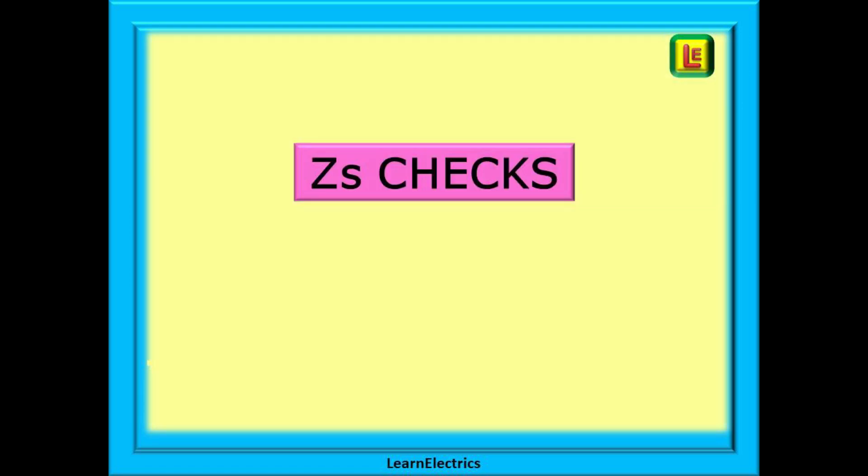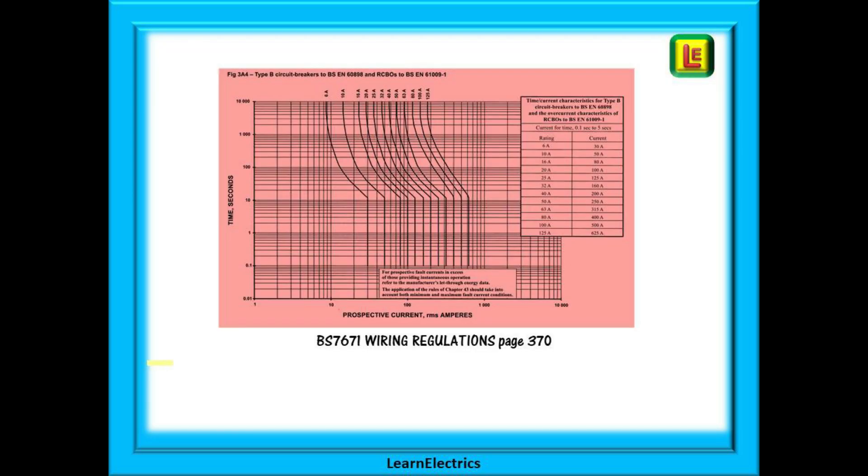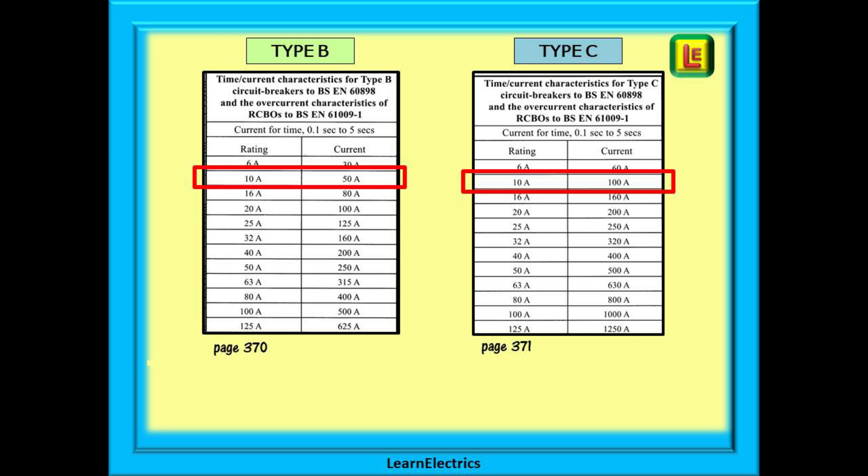Why does ZS matter? How do we know what they should be and what can we do? Here is a page from the wiring regulations book, page 370 in this case. It shows the response curves for a B type MCB. On page 371 are the response curves for a C type and page 372 has the D type curves. We are interested in the table at the top right of each page and we show the tables from pages 370 and 371 here.